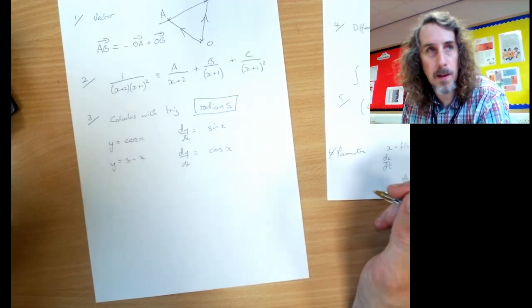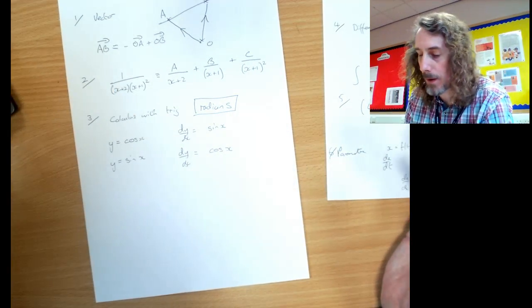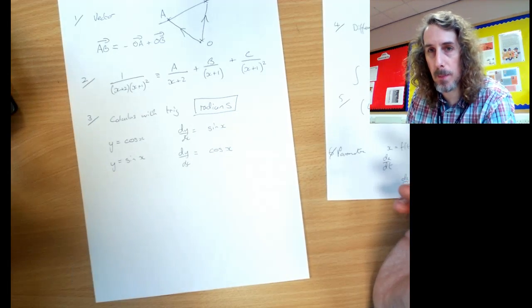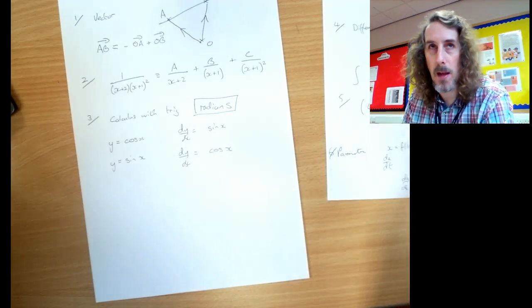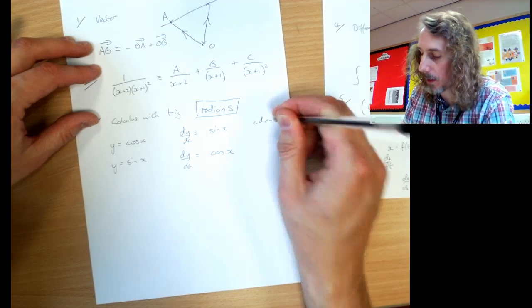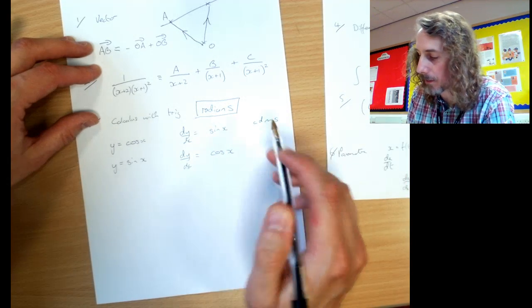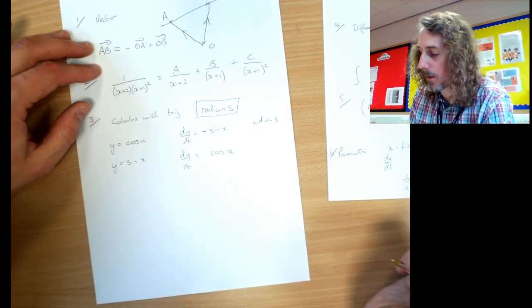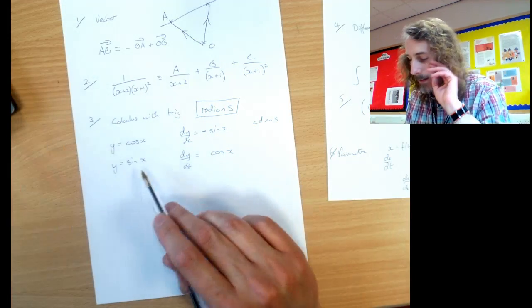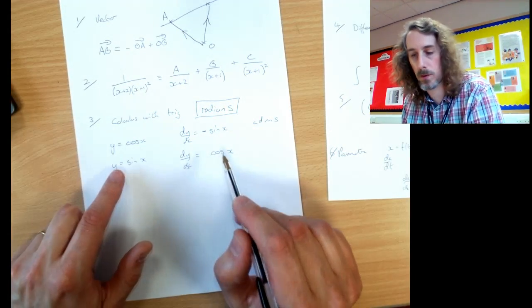One of them goes negative. How do you remember which one? I remember CD music system. CD music system tells me that cos differentiates to minus sine. So there's the minus. Cos differentiates to minus sine. So sine must go to positive cos.